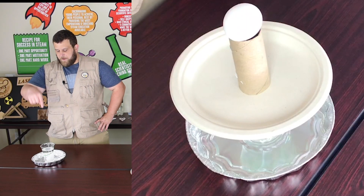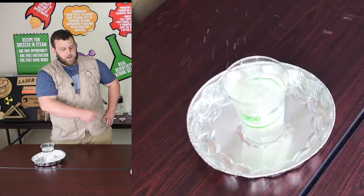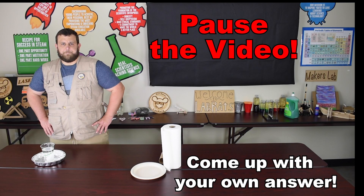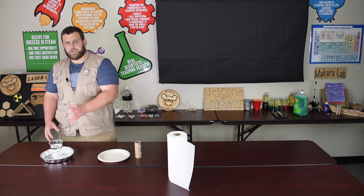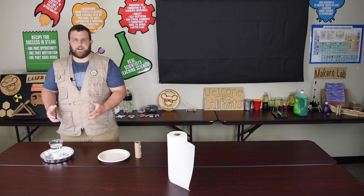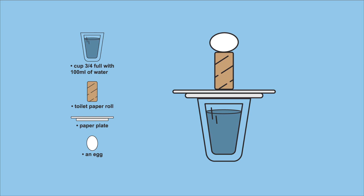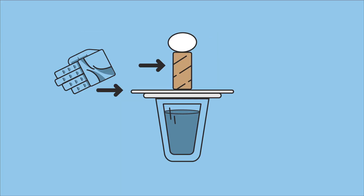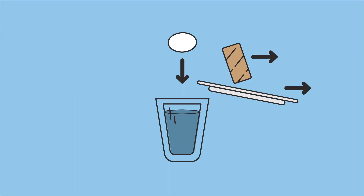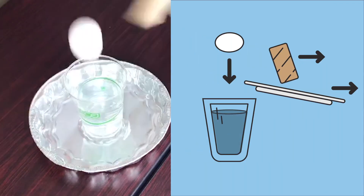Why do you think the egg fell straight down into my cup of water instead of flying left with the paper plate and TP roll? It has inertia, it has mass, it has weight. The force applied to it was gravity pulling it straight down into the cup of water. I hit the paper plate and the TP roll with a force — they flew left. But I didn't hit the egg, so it only had the force of gravity pulling it straight down.